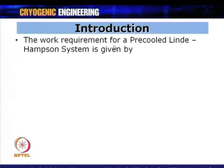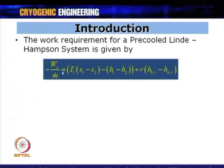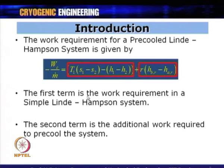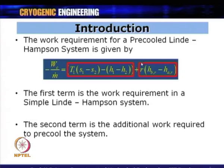The work requirement of a pre-cooled Linde-Hampson cycle is given by: -Wc / M-dot = [first bracket] + [second bracket]. The first bracket is the work requirement of a simple Linde-Hampson system, whose derivation we have seen previously. The second bracket is the additional work required when going from a simple to a pre-cooled Linde-Hampson system — this is the work done by the refrigeration or pre-cooling circuit compressor, and it represents the additional amount of work due to pre-cooling.